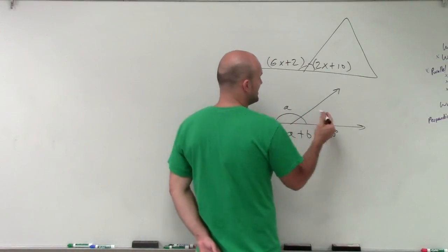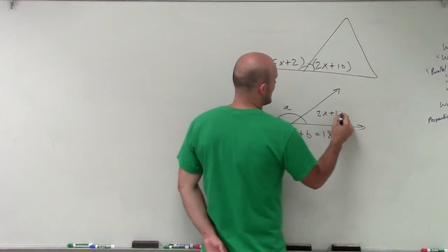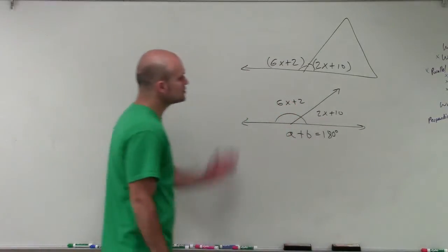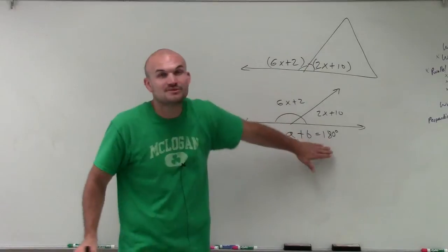So in this case, instead of b, I have 2x plus 10. Instead of an a, I have 6x plus 2. So these two angles add up to give me 180.